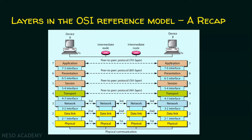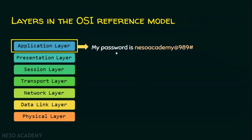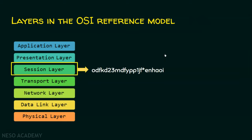We will now see an example so that it will be clear. Let's assume the application layer is generating data which is confidential information. Suppose the user sitting at one computer wants to send this information to a user working at another computer — let this be a confidential information, say "My password is nesoacademy@989#". So the user wants to send this information to the other user. This information generated by the application layer is given to the presentation layer. The presentation layer modifies or converts that content into some format, and after conversion it is given to the session layer.